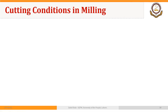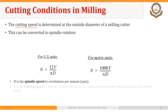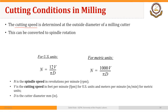We will discuss cutting conditions in milling. The cutting speed is determined at the outside diameter of a milling cutter. It is similar to a drilling operation because cutting speed relates to the outside diameter of the cutter. This can be converted to spindle rotation in the same manner as in turning and drilling using the same formula, where D is the diameter of the cutter.